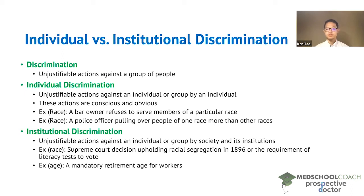The literacy test example is an example of indirect discrimination. At first it's not obvious that requiring literacy tests may be discriminating against any particular race. However, in the states where they applied this requirement, it turned out that the literacy rate was different among different races, so it favored races with a high literacy rate and was unfavorable for races with a low literacy rate.